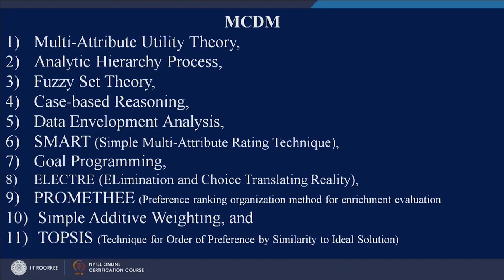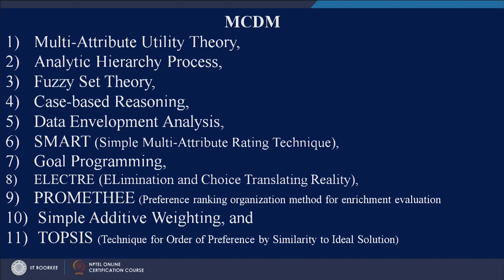A very prominent technique is Multi-Attribute Utility Theory. Then you have AHP, called Analytic Hierarchy Process, which we will see in detail. We have Fuzzy Set Theory, Case-Based Reasoning, DEA (Data Envelopment Analysis), and SMART (Simple Multi-Attribute Rating Technique). We also have Goal Programming, which we will see in detail, the ELECTRE method (Elimination Choice Translating Reality), PROMETHEE (Preference Ranking Organization Method for Enrichment Evaluation), Simple Additive Weighting, and TOPSIS.